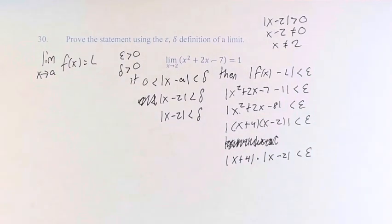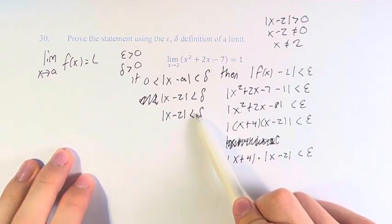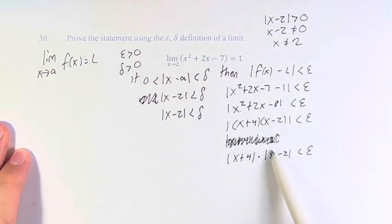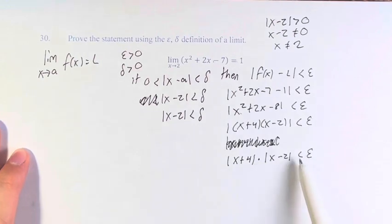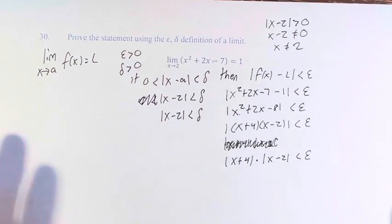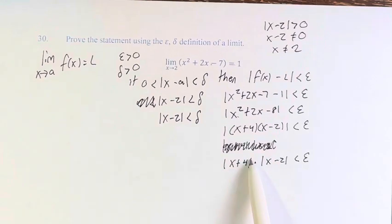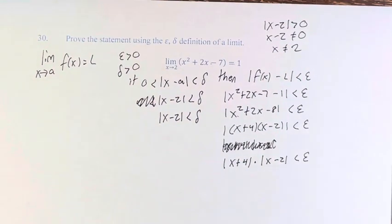Now, we want to have the absolute value of x minus 2 less than delta, and relate it to epsilon with some function attached to it. However, if we were to just divide by x plus 4, we'd have x's on both sides, and we don't want to do that.